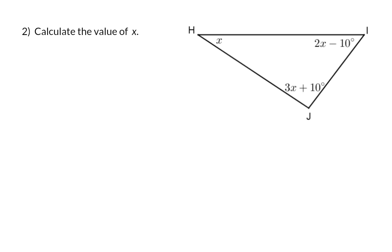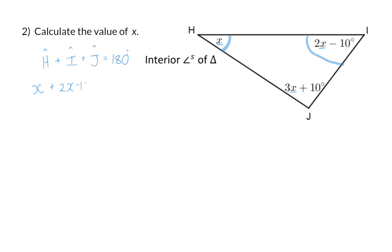Here, we now also add some algebra to the calculation, because there are various places we have the variable X, but the basic theorems still stay the same. We know that the three angles — angle H plus angle I plus angle J — should add up to 180 degrees because of interior angles of a triangle. Angle H has a size of X, angle I is 2X minus 10, and angle J is 3X plus 10, and they should still add up to 180 degrees. Remember that you can only add up like terms.